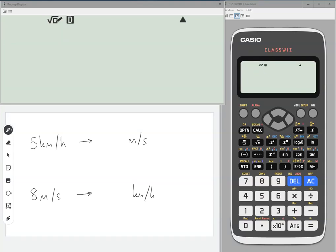In this video, I'm going to show you how to convert between kilometers per hour and meters per second using your calculator. The calculator has a conversion section, so it's above the number 8.